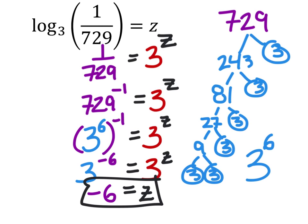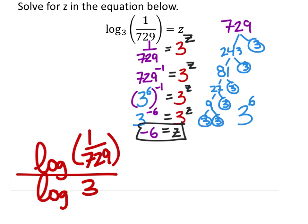You could check this in the calculator using the change of base property. So again that would be log of, and again these are common logs, log of 1 over 729 and that over the log of 3. So if you put that into the calculator again you get the same thing and it is negative 6.